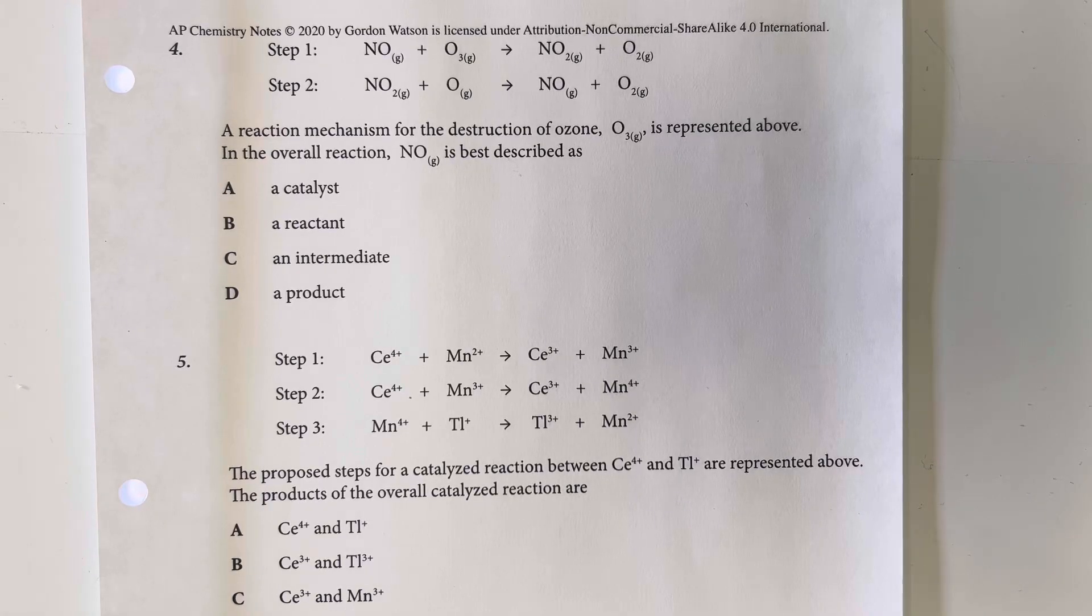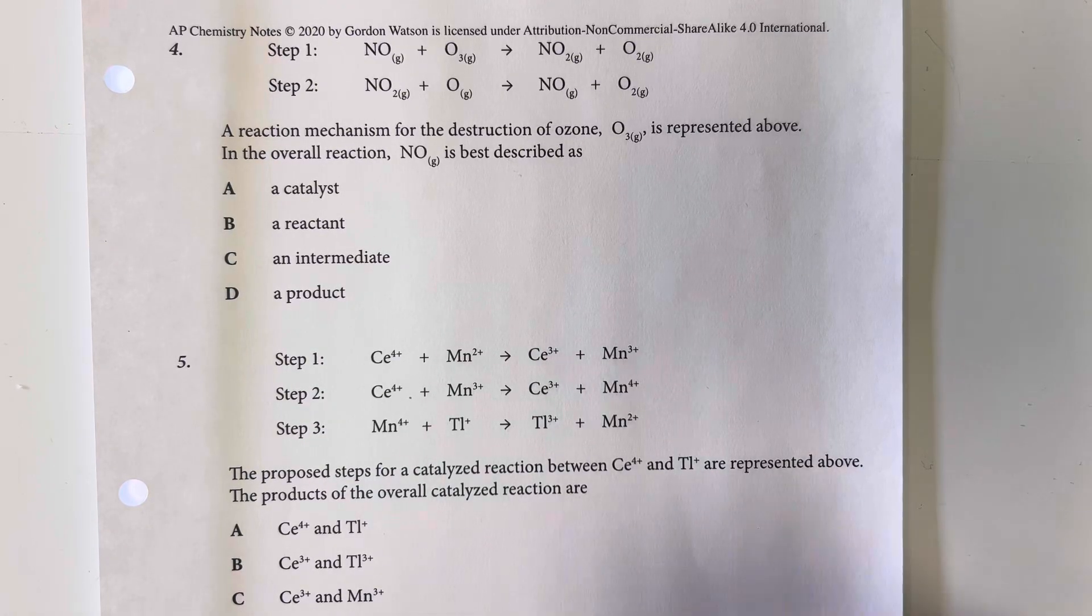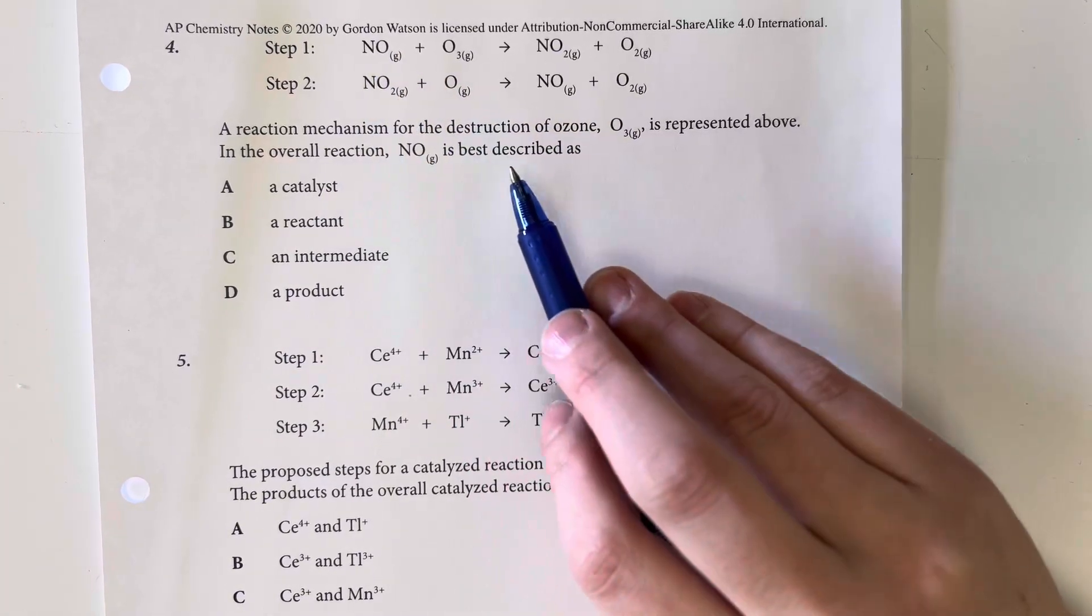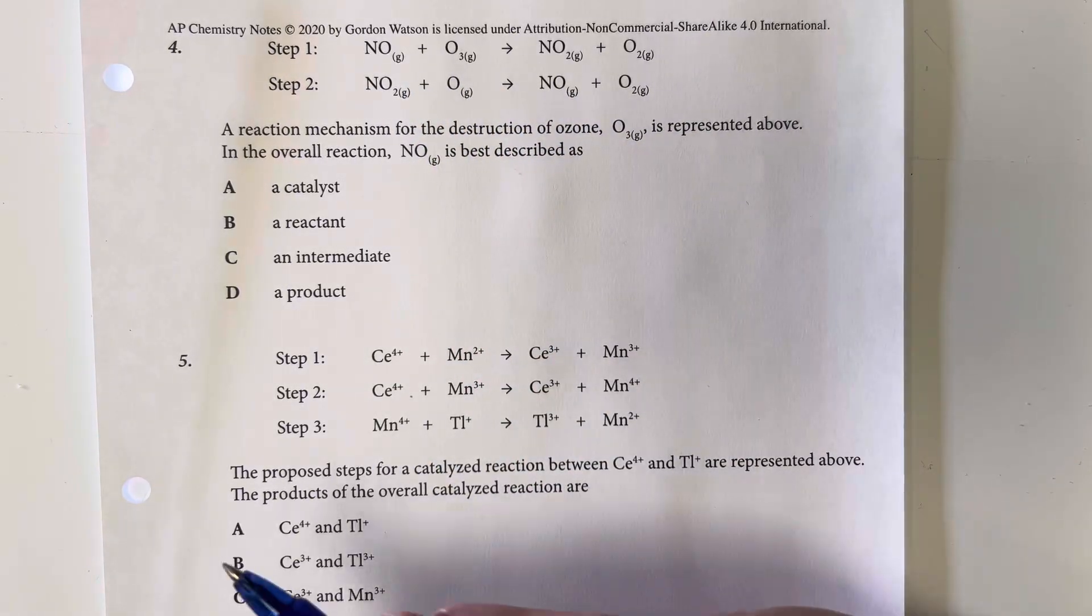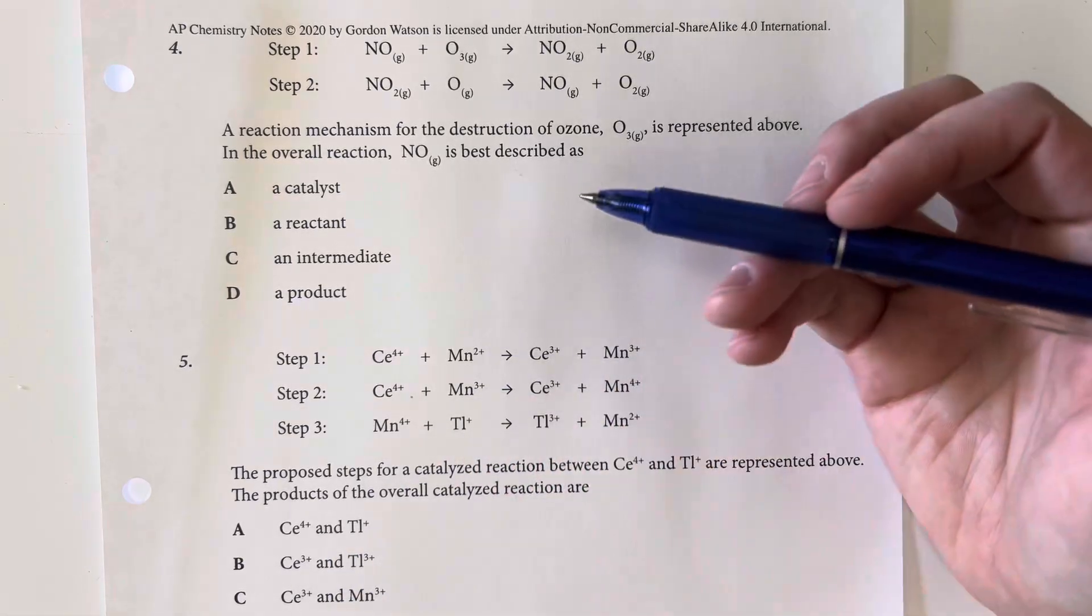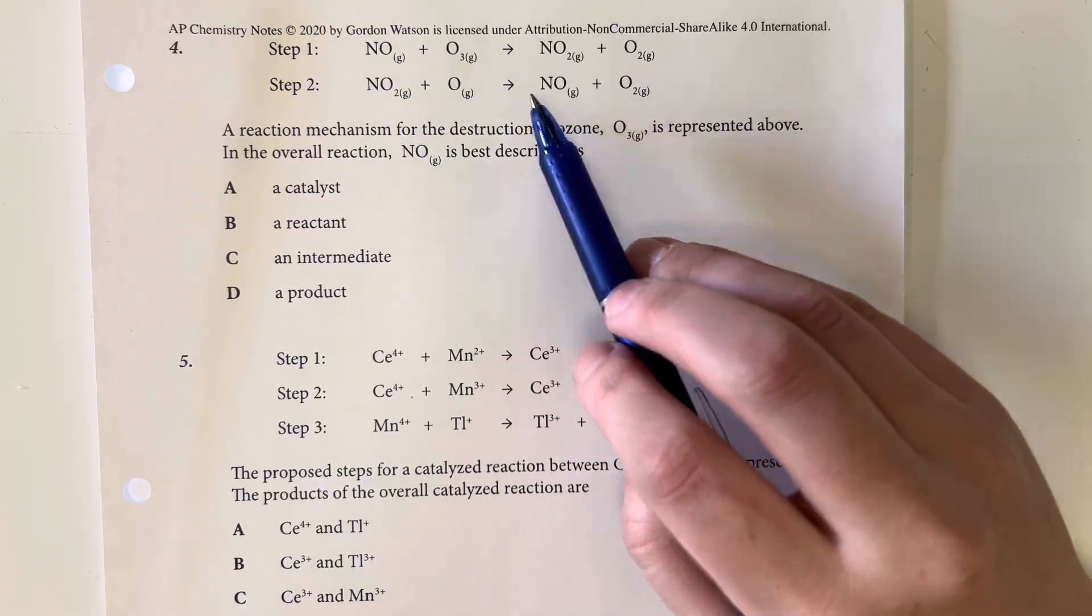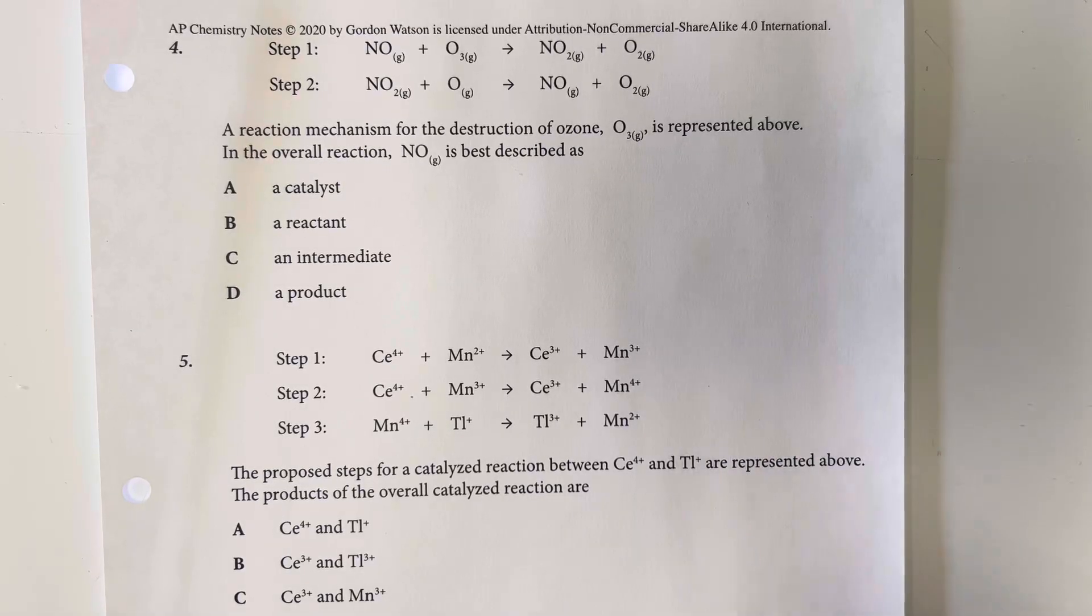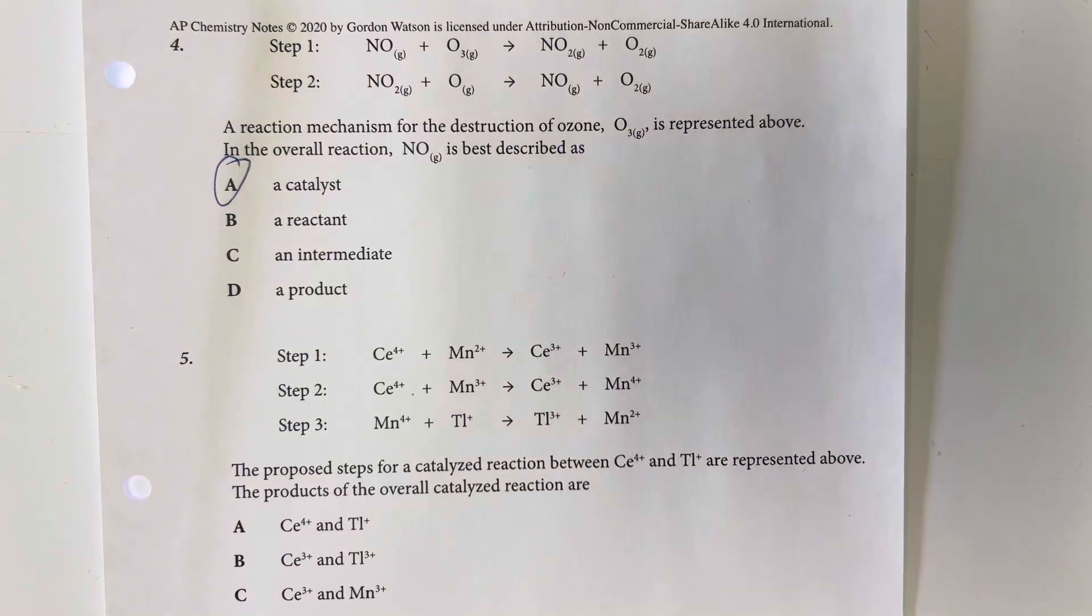A reaction mechanism for the destruction of ozone is represented above. In the overall reaction, nitrogen monoxide is best described as. So we can see that nitrogen monoxide appears at the very beginning as a reactant and at the very end as a product, which means it made it through unchanged effectively. Since we do not create or destroy the nitrogen monoxide, it makes it through the reaction. It's not really a part of the reaction, and so it is going to be a catalyst and a catalyst only.